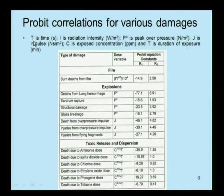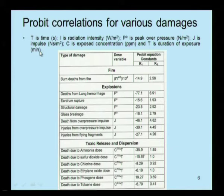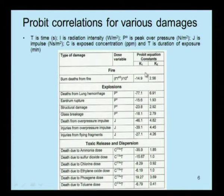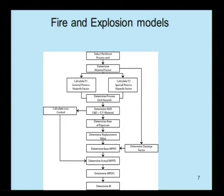In the table: t is time in seconds; I is radiation intensity in watts per square meter; P0 is peak over pressure in Newtons per square meter; J is impulse in Newton-seconds per square meter; C is the exposed concentration in parts per million; and T (capital) is the duration of exposure in minutes. If you know these values, substitute them into the equations to get the dose variable for different kinds of dispersions, and from that obtain the probit constants k1 and k2, which can be used to estimate y from the probit equation.